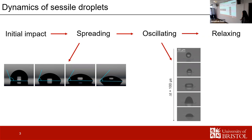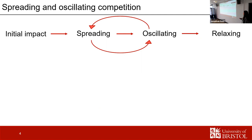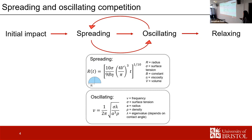We can't really think of spreading and oscillating as happening independently and consecutively — they happen in competition with one another. Looking at some models: spreading has been modeled using Tanner's law, which models the radius of the droplet on the surface with time. This has been parameterized for much larger droplets, but I wanted to probe whether it was still appropriate for the picoliter size.